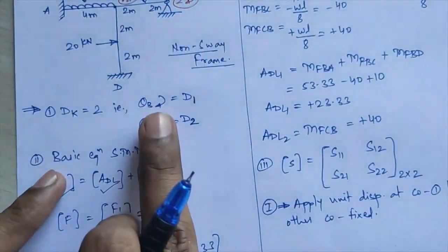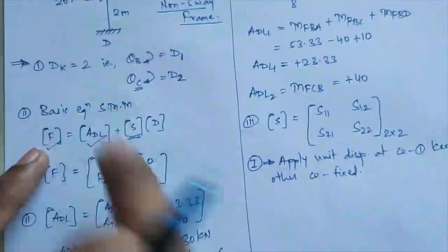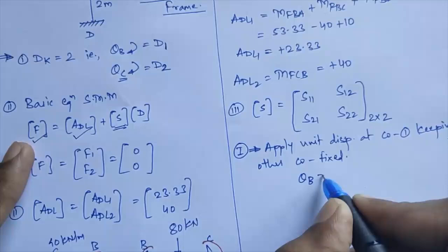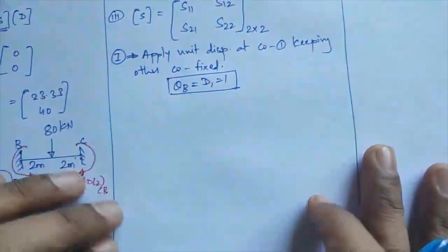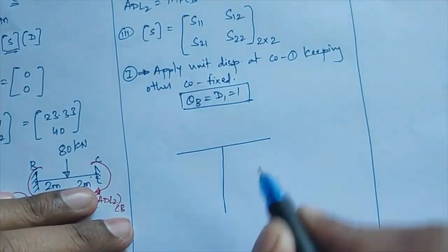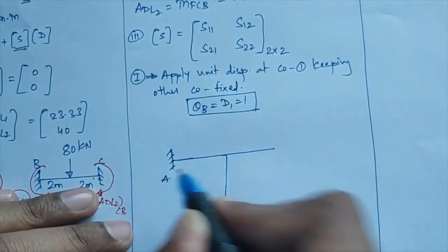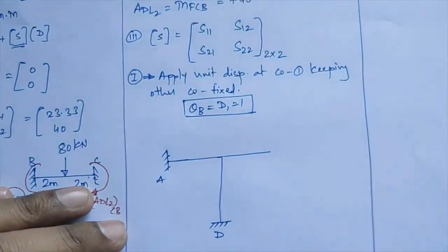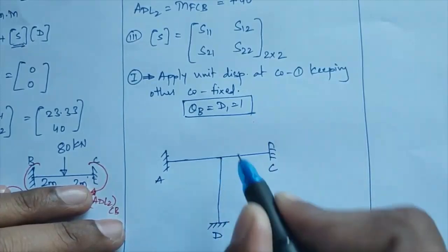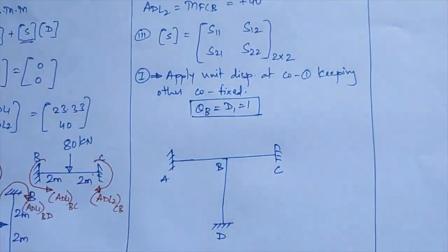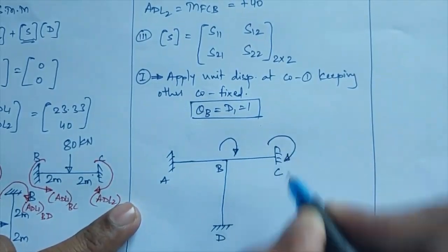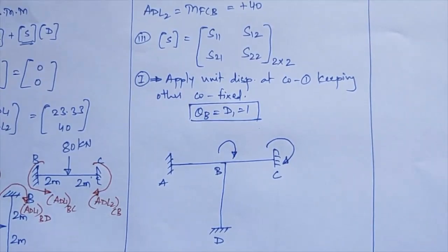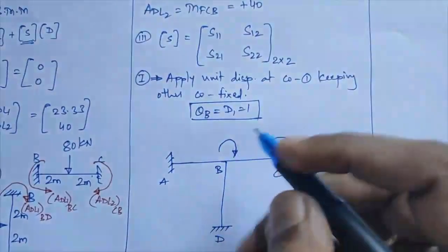We apply theta B = D1 = 1 at joint B while joints A, D, and C remain fixed. We mark the stiffness coefficients at the first and second coordinates, always assuming them initially in the clockwise direction. The coefficient at the first coordinate (point B) when unit displacement is applied at B gives S11; at the second coordinate (point C) it gives S21.